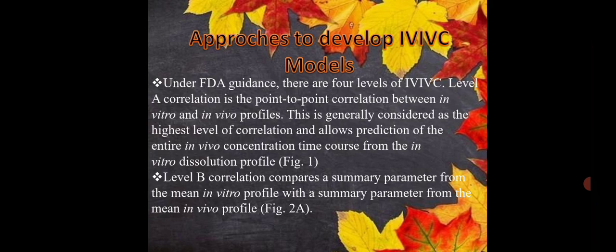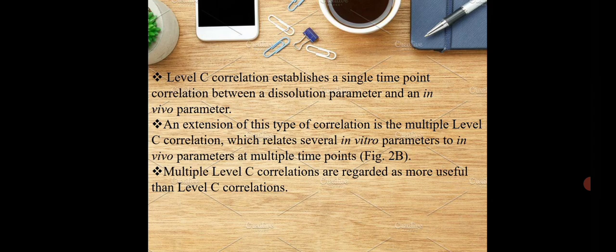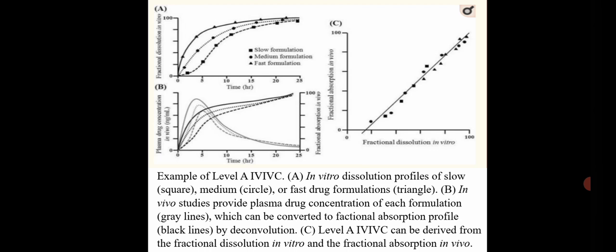In that also, we have level A, B and C. For the more detailed IVIVC model, I can make another video for you guys. If you need that, you can just tell me in the comment box section. Level C and level A and level B is going to tell you how the correlation or multiple correlation is going to work in this kind of studies. These are the graphs which I am going to show for the IVIVC level A, level B and level C.